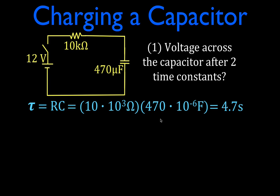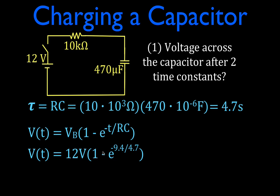The equation we use to calculate voltage with respect to time is V(t) equals the voltage of the battery times 1 minus E raised to the power of minus T over RC. RC is our time constant, 4.7 seconds. We want to know two time constants, which is 9.4 seconds. Plugging in: minus 9.4 divided by 4.7 equals minus 2. So we have 12 times 1 minus E raised to the power of minus 2, because it's two time constants.